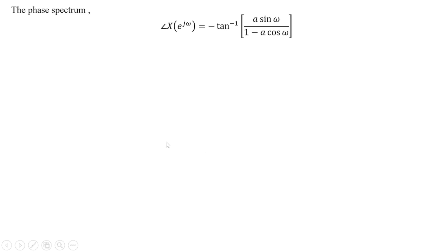Looking at the phase spectrum: the angle of X(e^{jω}) equals minus tan inverse of (a·sinω divided by 1 minus a·cosω). This gives us both the magnitude spectrum and phase spectrum of the signal.